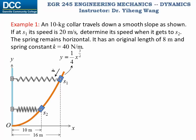Let's look at this example. We have a 10 kg collar connected to a spring that travels down a smooth slope. If initially it has a speed of 20 m/s, we need to determine its speed when it gets to the second state. Since the slope is smooth, we can neglect friction. Therefore the only forces doing work to this collar are its weight and the spring force, and both are conservative forces. Therefore we can apply the conservation of energy to solve this problem.